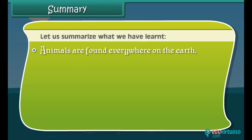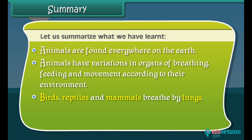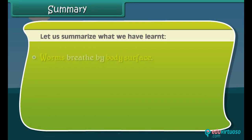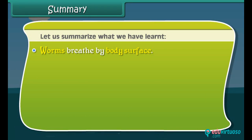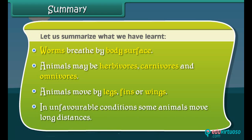Summary — what we have learned: Animals are found everywhere on the earth. Animals have variations in organs of breathing, feeding, and movement according to their environment. Birds, reptiles, and mammals breathe by lungs. Fish and water animals breathe by gills. Insects breathe by spiracles and worms breathe by body surface. Animals may be herbivorous, carnivorous, or omnivorous. Animals move by legs, fins, or wings. In unfavorable conditions, some animals move long distances.